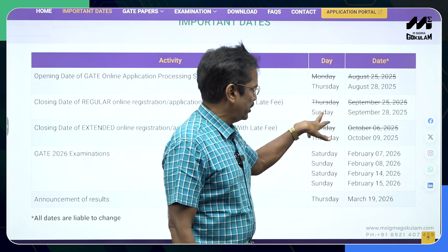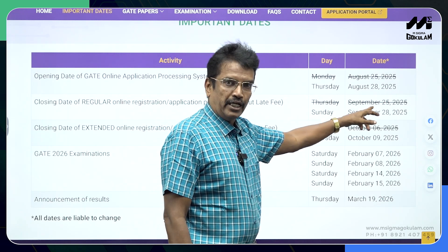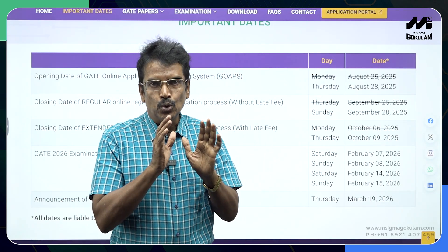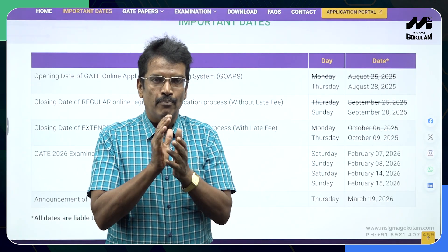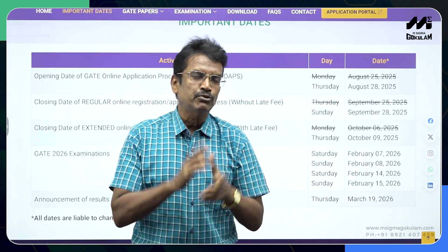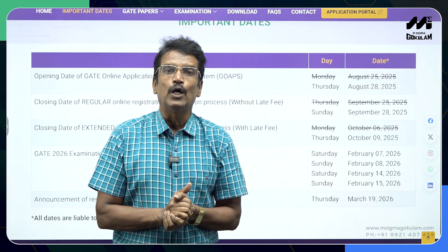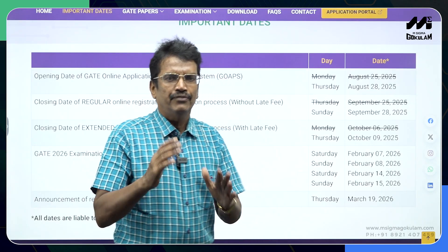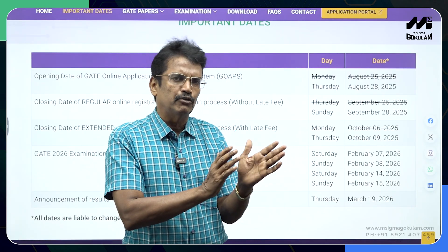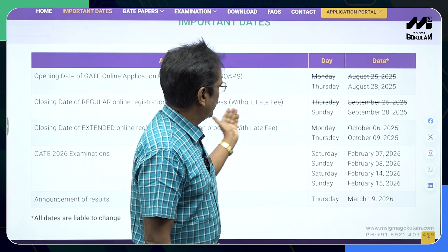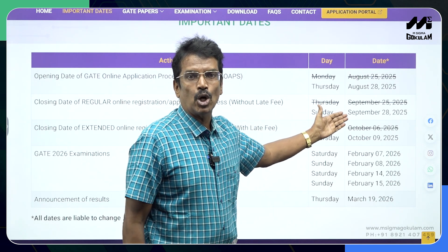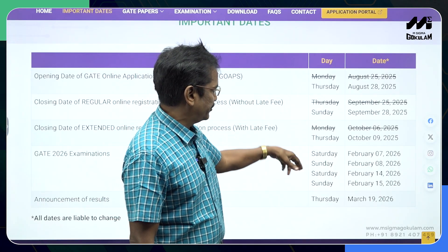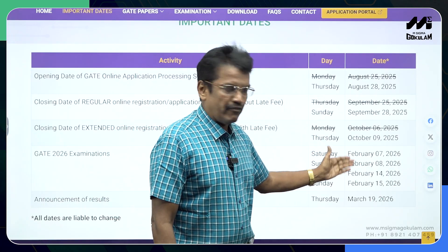The last date for online registration will be September 28th — earlier it was September 25th but it has been changed. That means exactly one month is there to register online for the upcoming GATE 2026, which is being conducted by IIT Guwahati. With late fee, registration will go up to October 9th, but I suggest you finish the online registration before the closing date without late fee.